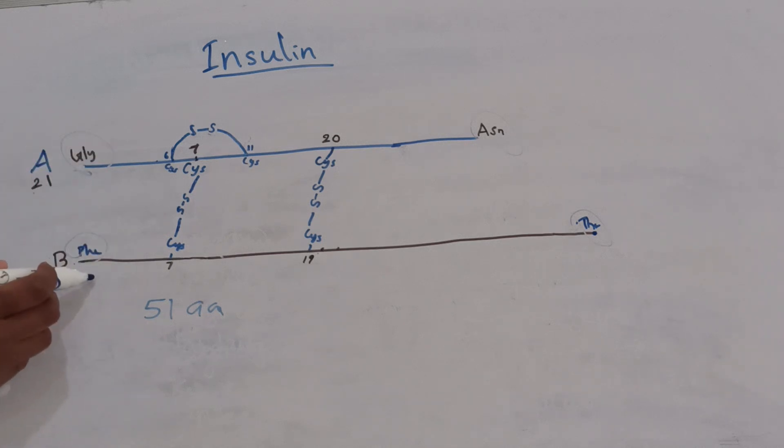Both chains are held together by disulfide linkages. The first disulfide linkage is present between the 7th amino acid of A and B chains.